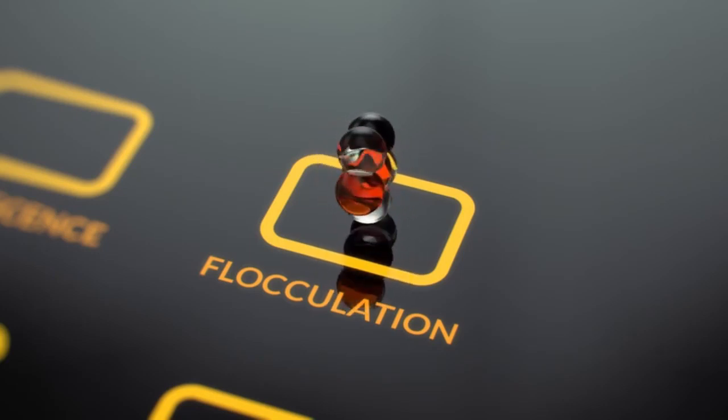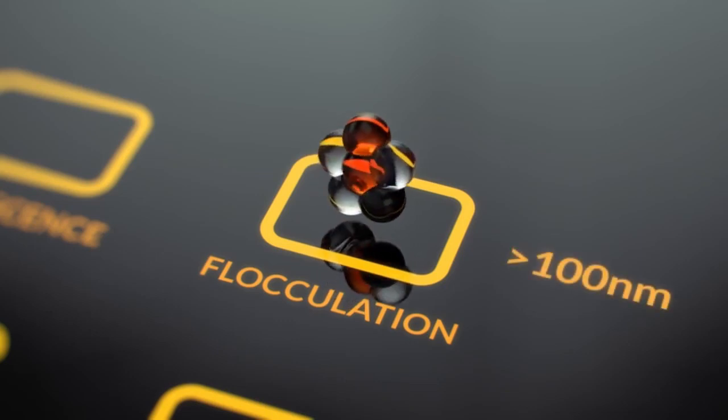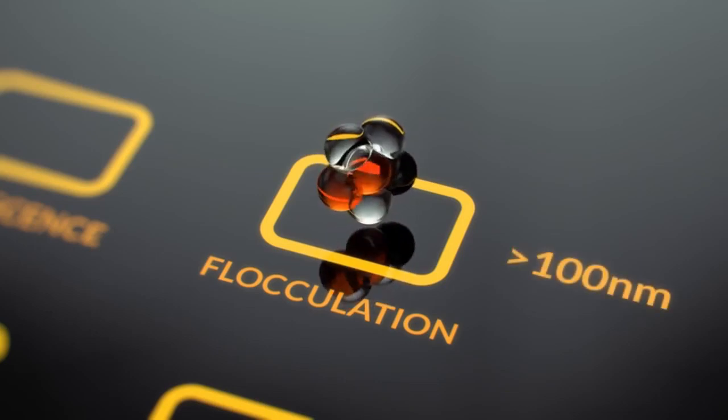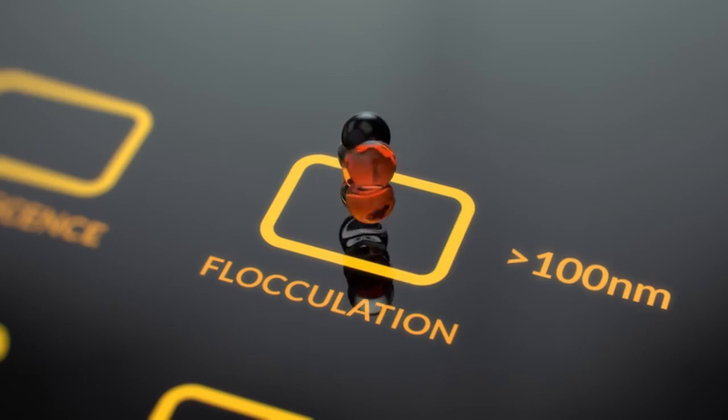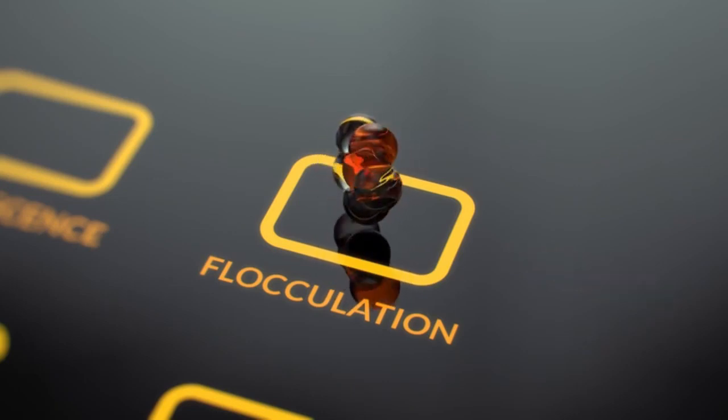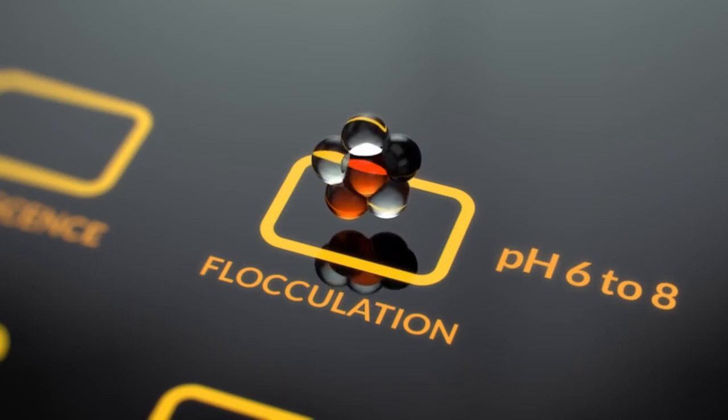This process will form particles larger than 100 nanometers, and these particles, called flocks, will then be able to settle. This works best at a pH of between 6 and 8.